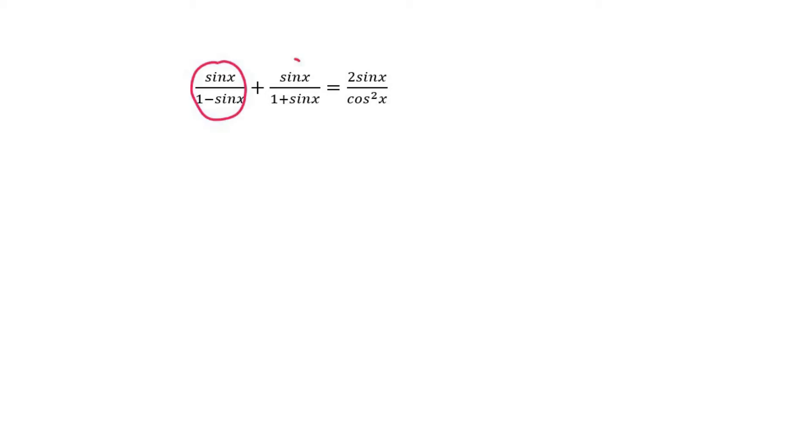When you get a fraction plus or minus another fraction, step one, get a common denominator. So the common denominator is just going to be this and this. So our LCD is going to be 1 minus sine x and 1 plus sine x.